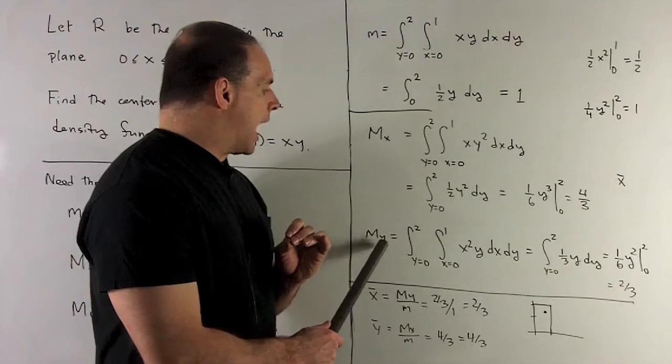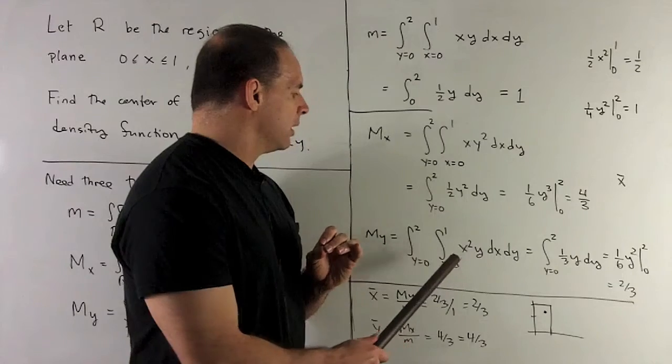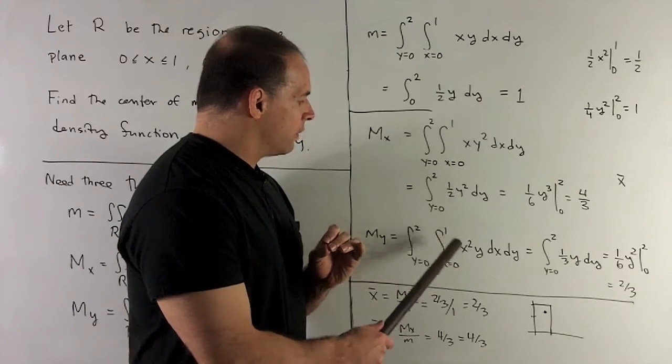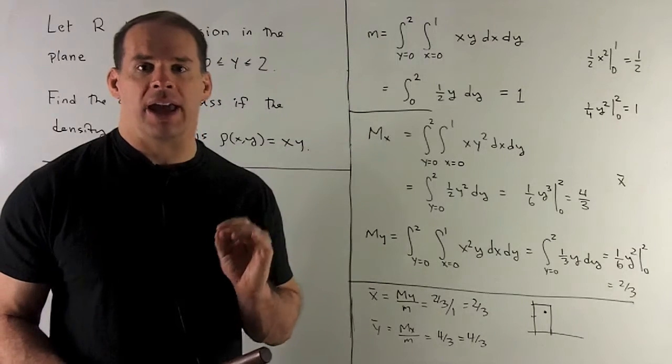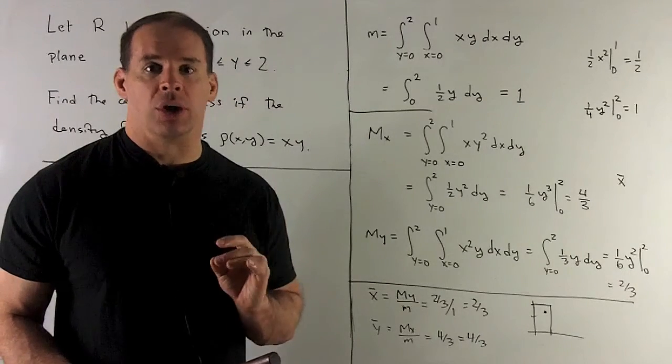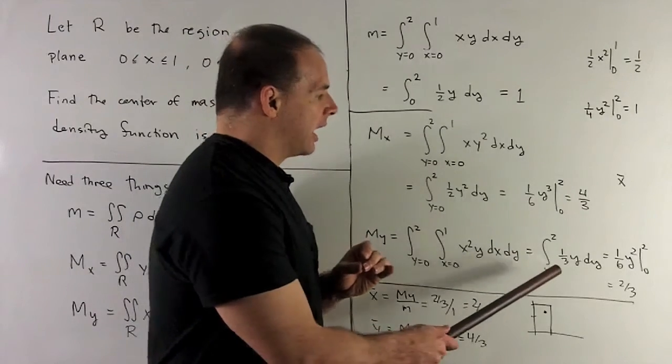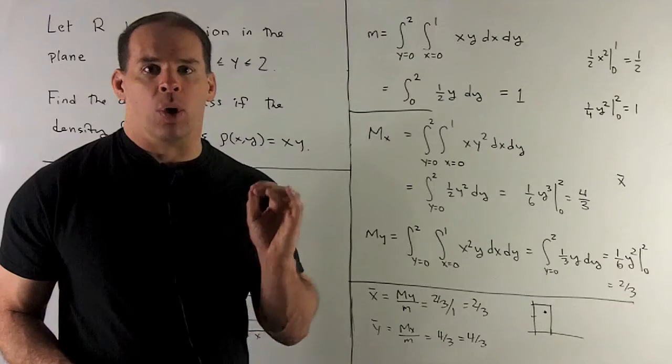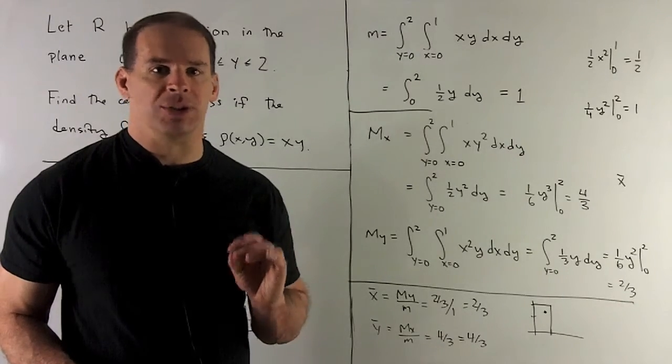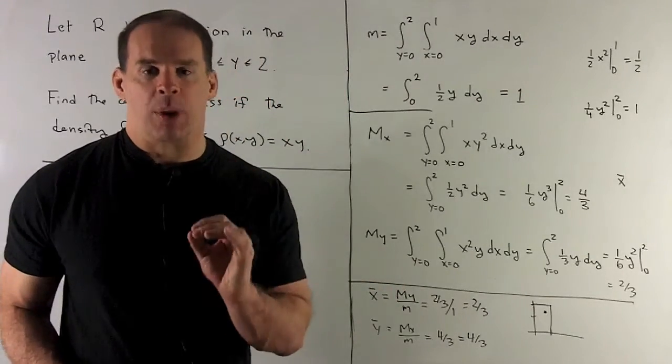For a moment about the y axis, same idea. It's going to be x times the density. Take our integral from 0 to 1 of x squared. So add 1, flip it over. Gives you 1 third x cubed. Put in your 1, your 0. You get a 1 third. So we're doing 1 third y, going from 0 to 2. Add 1, flip it over. I get 1 sixth y squared going from 0 to 2. And that gives me a 2 thirds. So that's going to be x bar.